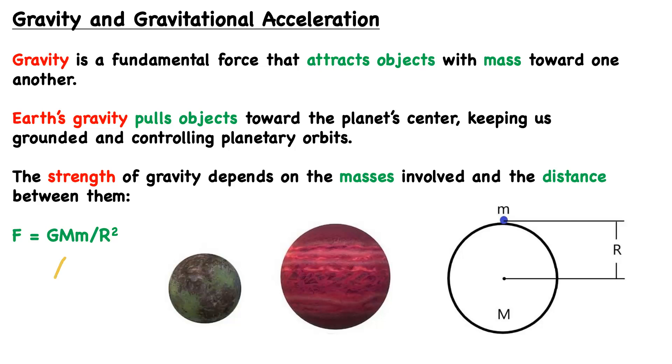We can see what the visual representation of this equation looks like on this illustration here. Capital M refers to the mass of the planetary body, so we can say Earth in this case. And m is, for example, our mass, or the mass of any object on Earth's surface.